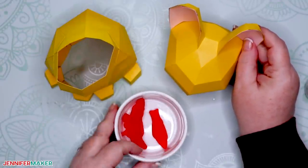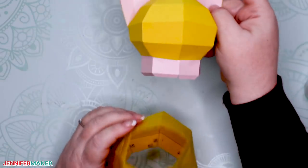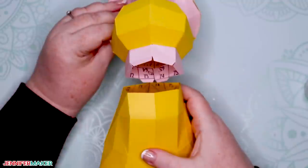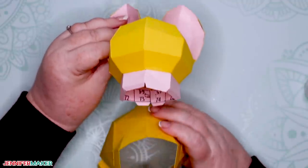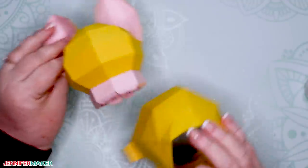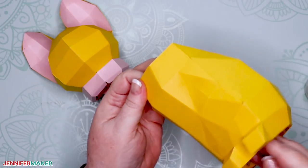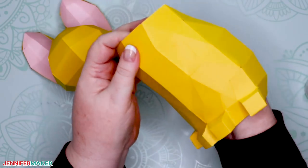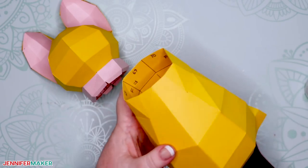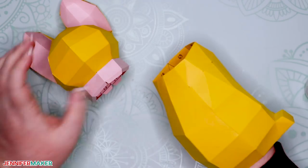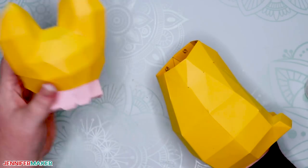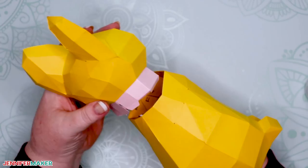Okay, so attaching the neck to the body is really just a matter of matching up numbers. But we're attaching two parts and it's not as easy to get our hands in there. So I recommend putting your hand right up inside the cat because that allows you to press on the glued tabs from both the inside and the outside.